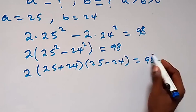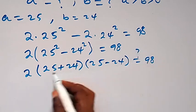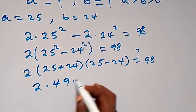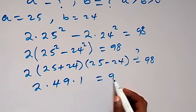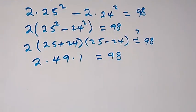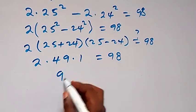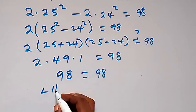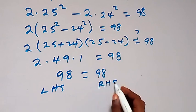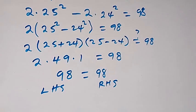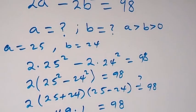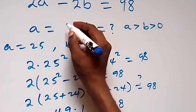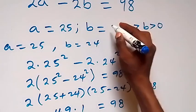This simplifies to 2 times 49 times 1 = 98, which gives 98 = 98. The left-hand side equals the right-hand side, confirming a = 25 and b = 24. That brings us to the end of this class.